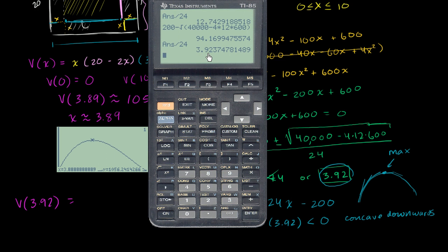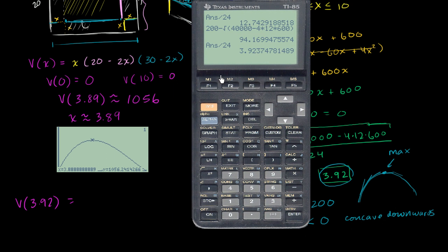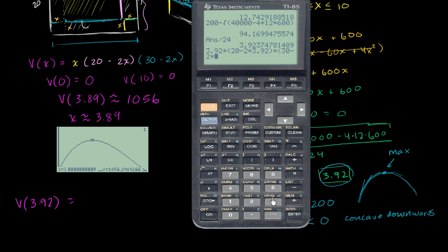I could use this exact value. Actually, I'll just use 3.92 to get a rough sense of what our maximum value is, our maximum volume. So it'll be 3.92 times this expression for the volume as a function of x. 3.92 times 20 minus 2 times 3.92, times 30 minus 2 times 3.92.